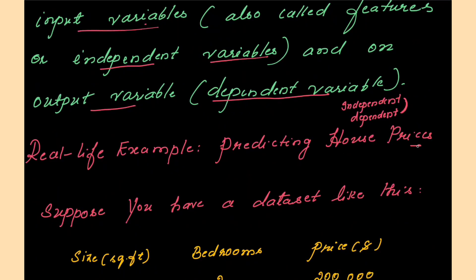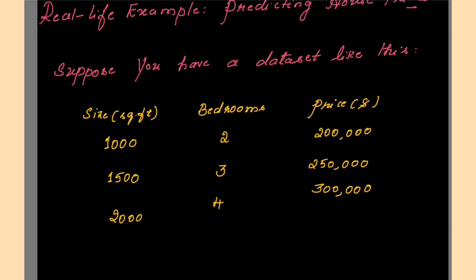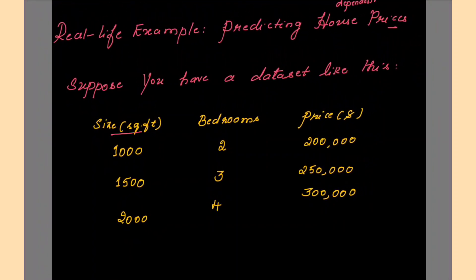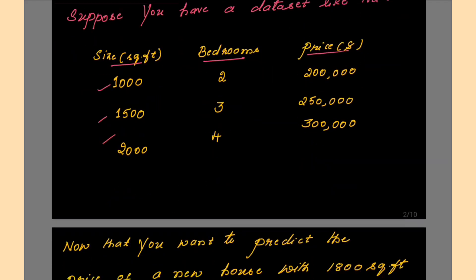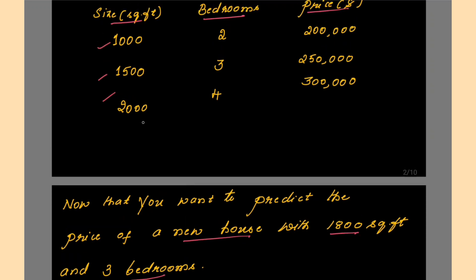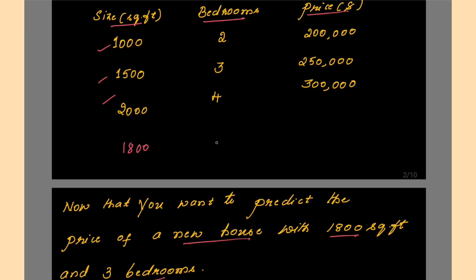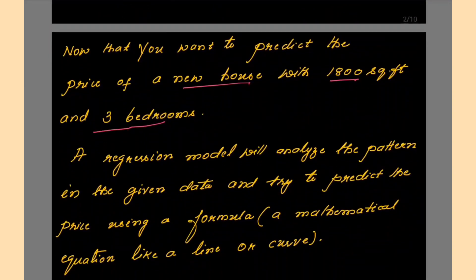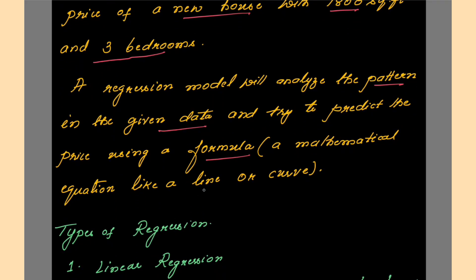A real-life example is predicting house prices. In the dataset, what is given is size in square feet, the number of bedrooms and price in dollars. There are three data points, and if you want to predict the price of a new house with 1800 square feet and three bedrooms, your regression model will analyze the pattern in the given data and try to predict the price using a mathematical equation like a line or curve.